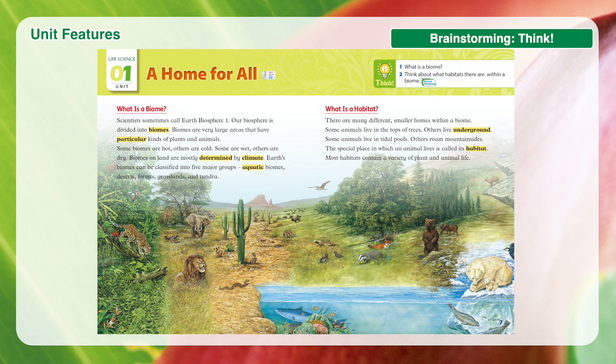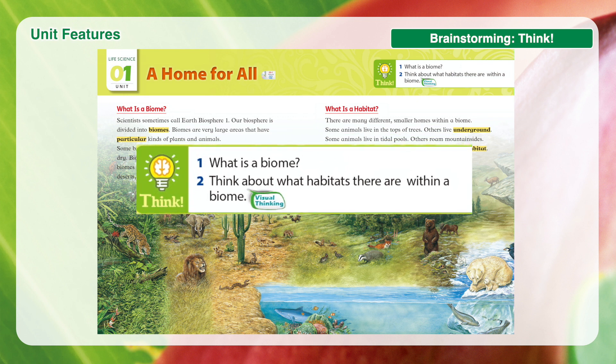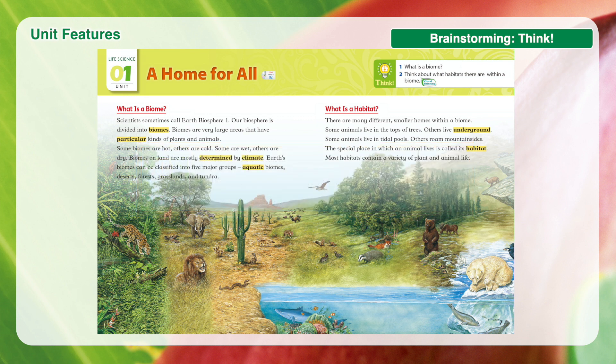The Think section consists of two questions that ask about the main topic of the unit. Students are encouraged to consider what the story is mainly about in advance so that they can try to answer the questions while reading. Answering the questions while reading will help students develop their critical thinking skills.